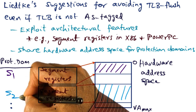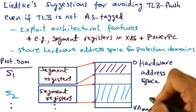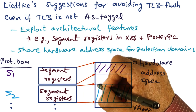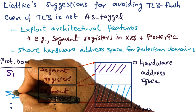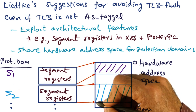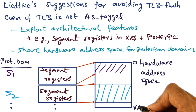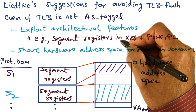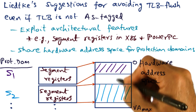Similarly, another protection domain, S2, can use the segment registers to carve out a different portion of the linear hardware address space. So for S2, the bounds for legal virtual addresses that can be generated by a thread running in this protection domain starts from here, ends here, and so on. In other words, we can take the hardware address space that's available and, using segment registers provided by the hardware, carve out the hardware address space into these regions.